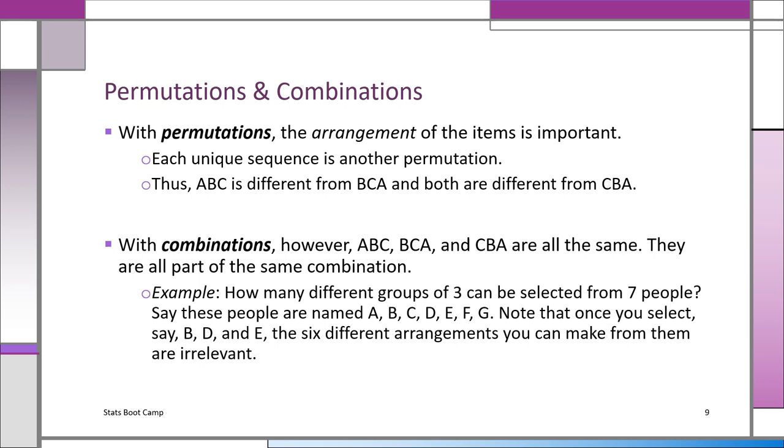Now we're going to talk about permutations and combinations. Permutations, the arrangement of the items is important. Each unique sequence is another permutation. Thus, ABC is not the same as BCA, which is not the same as CBA. You just change around the arrangement the way it's ordered and it's a different permutation. So you get generally a larger number. With combinations, ABC, BCA, CBA are not counted as three separate arrangements. It's the same combination. You still got ABC. The same three letters are in ABC, BCA, and CBA.